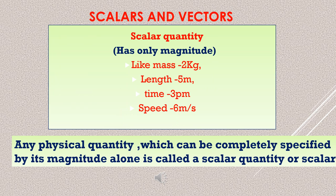These are scalar quantities because they have only magnitude. Mass 2 kg — that is the magnitude. 5 meters — that 5 is the magnitude. Time 3 pm — that 3 is the magnitude. So, quantities having only magnitude are called scalar quantities. A physical quantity which can be completely specified by its magnitude alone is called a scalar quantity or scalar.